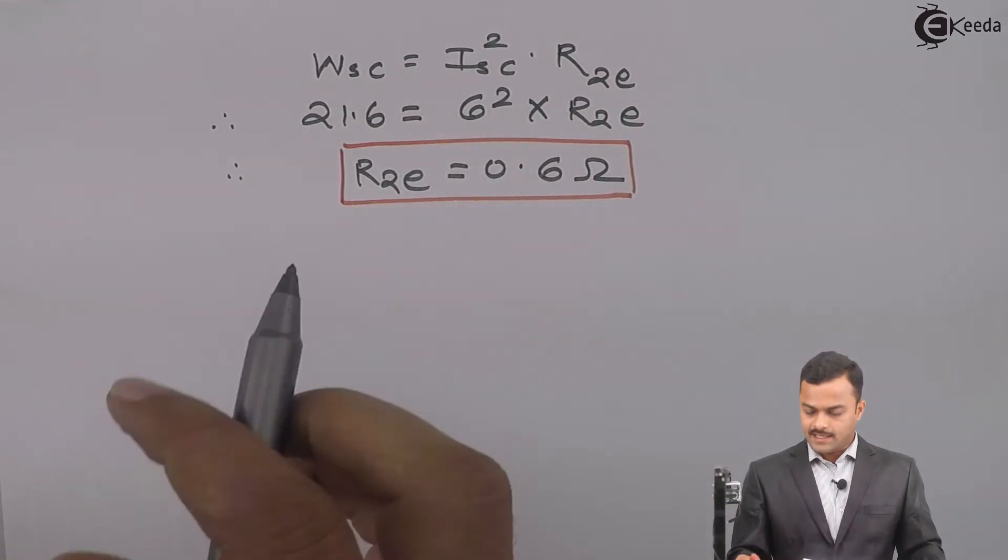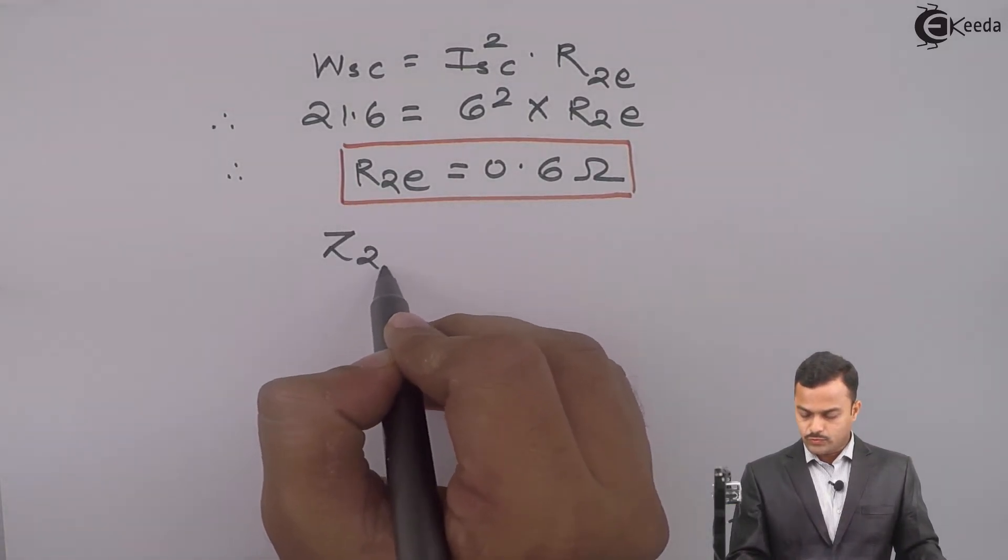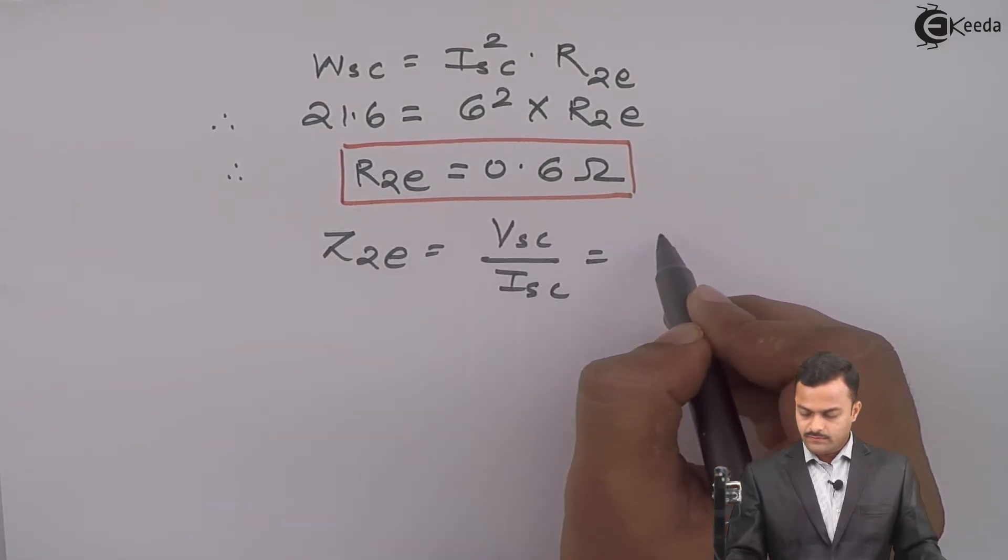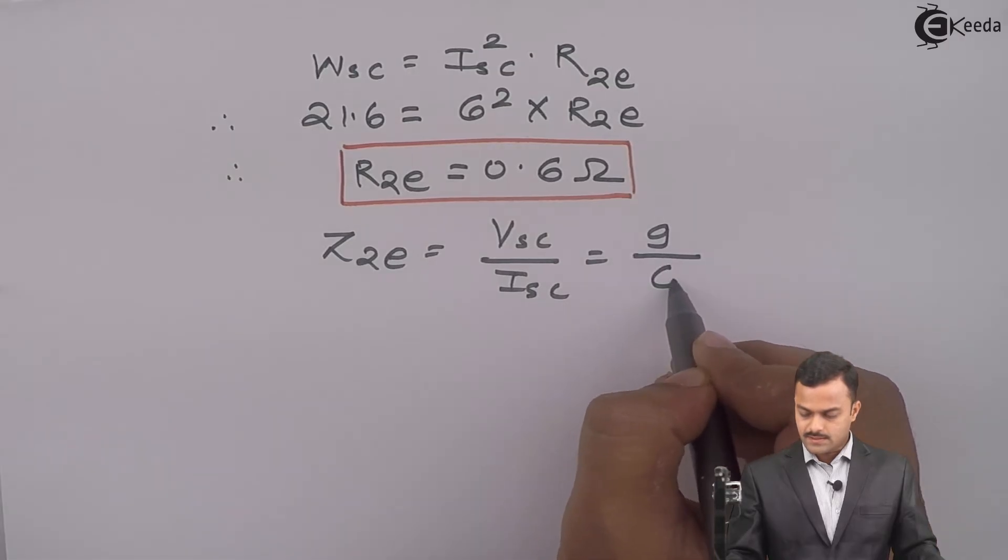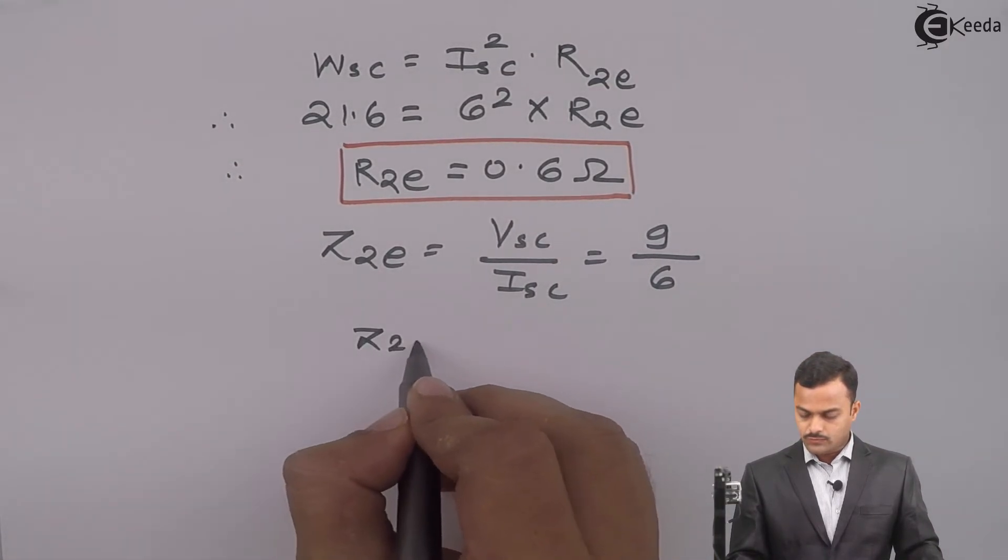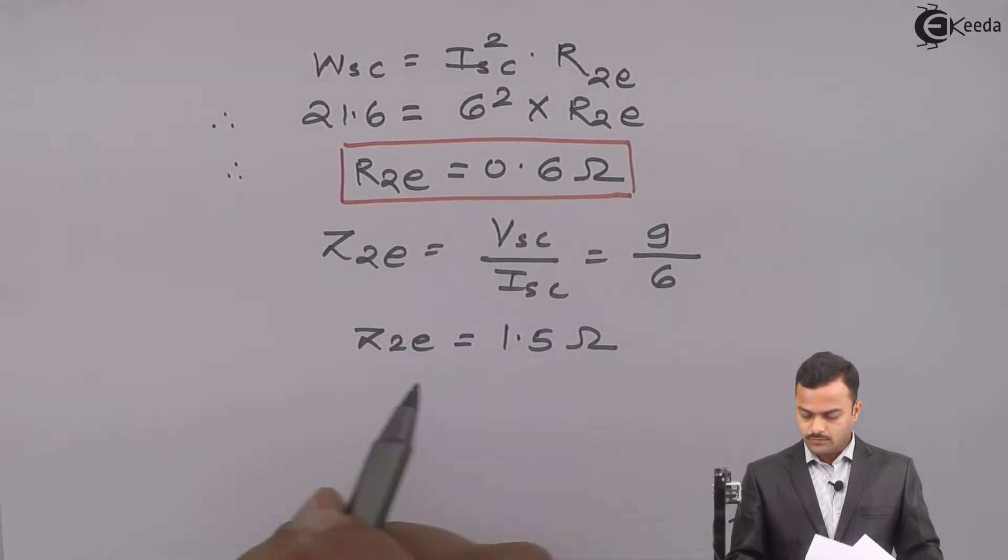If I know voltage and current, I can get impedance. Z2E is VSC upon ISC. VSC is 9V, ISC is 6A. If you solve, you will get Z2E as 1.5 ohm.